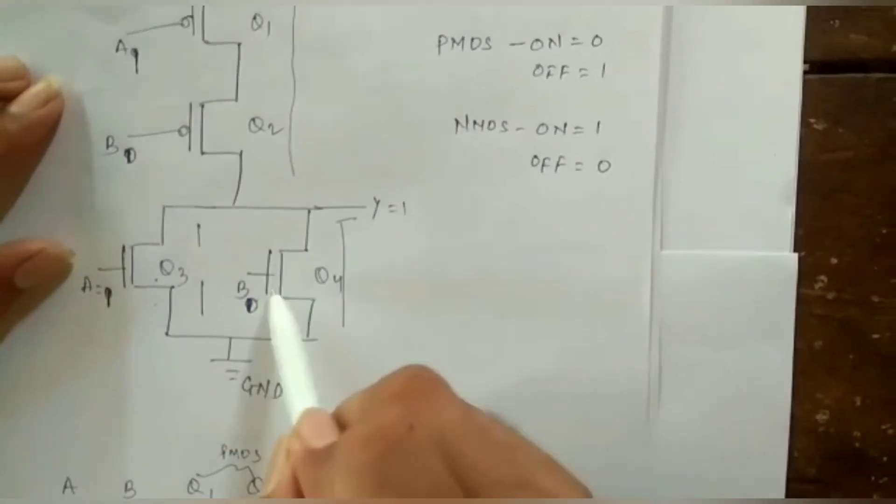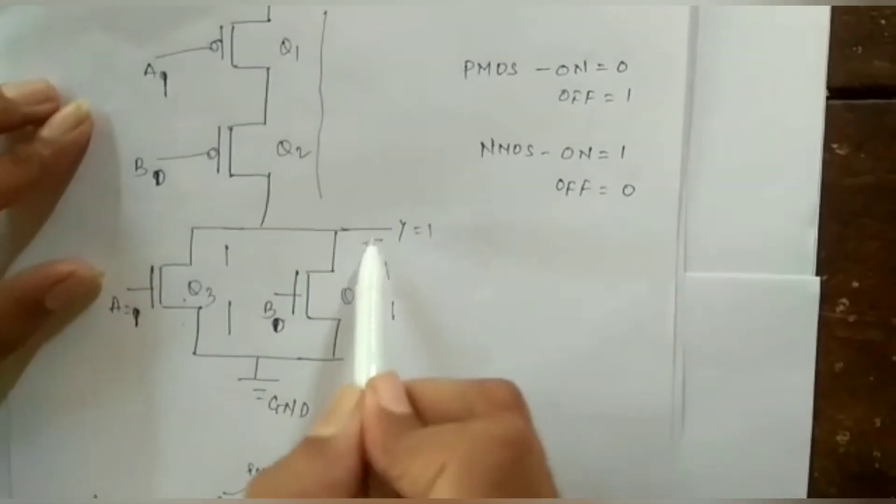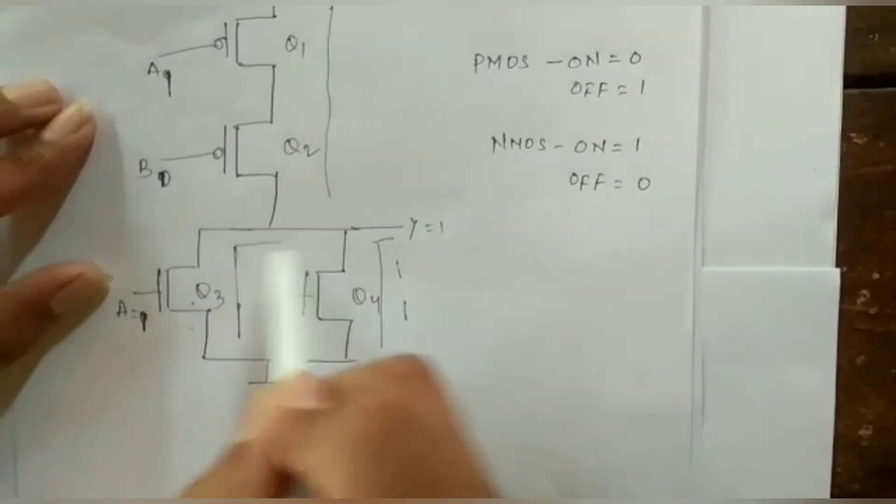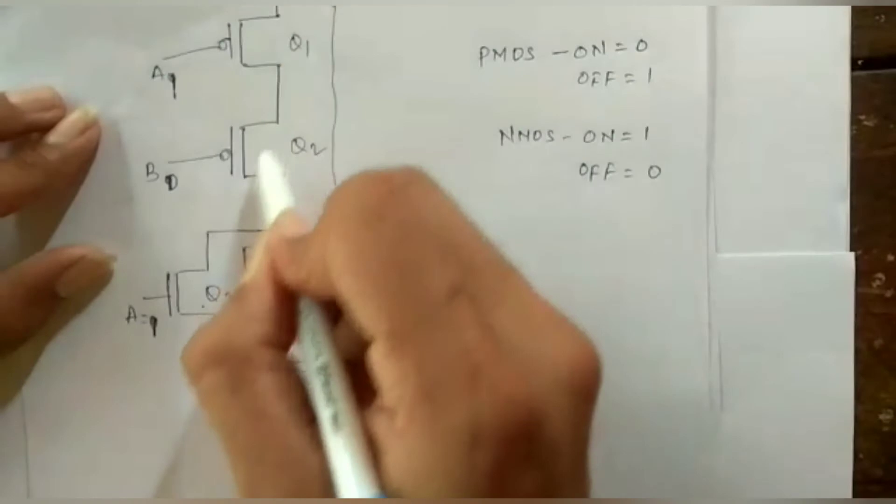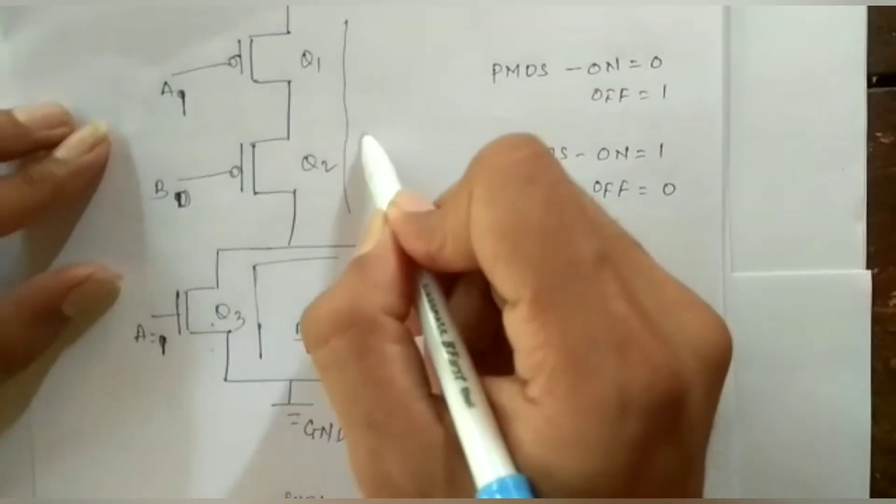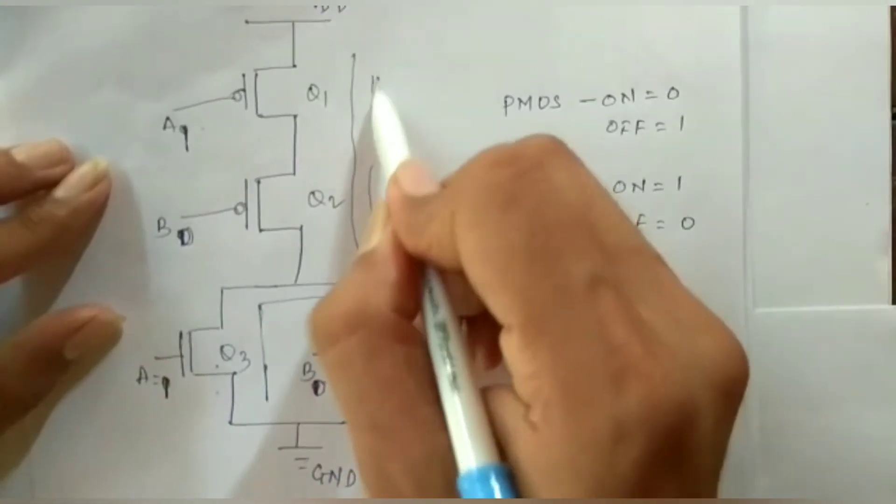A is 1, since B is 0 this will be OPEN and A is CLOSE here. And here it will be CLOSE but because A is 1 this will be OPEN.